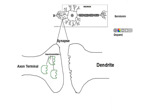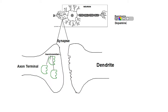Another neurotransmitter is dopamine. Dopamine is very complicated as well — too much dopamine will cause schizophrenia, making you see things, be delusional, and think things that aren't actually real. Having too little dopamine causes Parkinson's disease, which doesn't seem to have anything to do with schizophrenia, so it's a little bit odd.